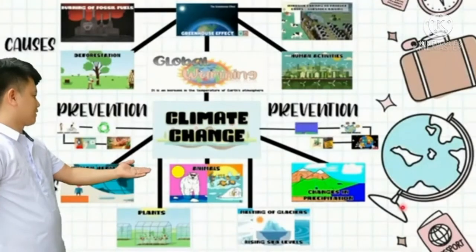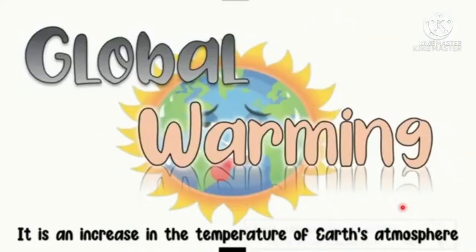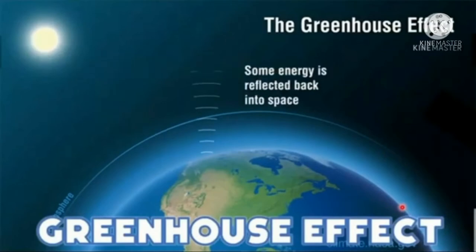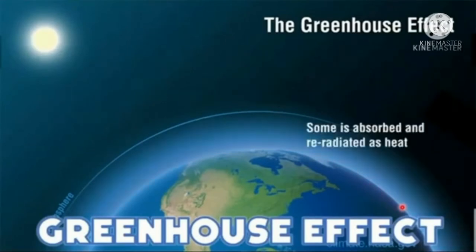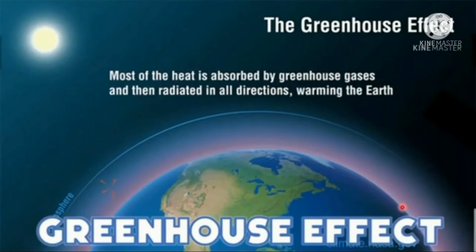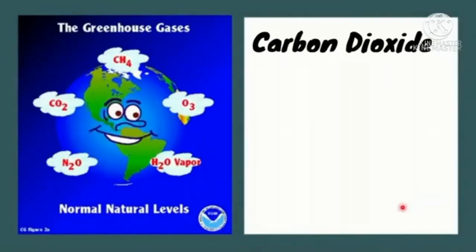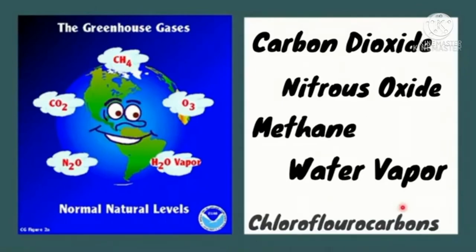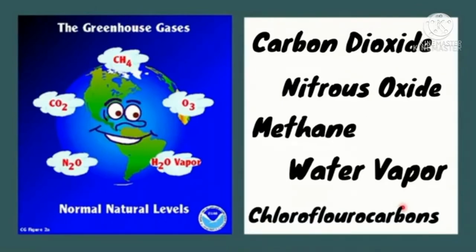Global warming, as we all know, is an increase in the temperature of earth's atmosphere. This gradual increase in the overall temperature of the earth's atmosphere is due to the greenhouse effect. Greenhouse effect is the process by which radiation from the sun is absorbed by greenhouse gases and not reflected back into space. Carbon dioxide, nitrous oxide, methane, water vapor, and chlorofluorocarbons are some of the greenhouse gases responsible for the existence of life on earth.